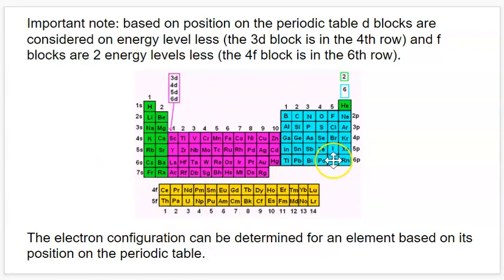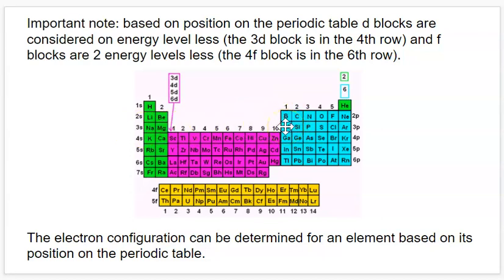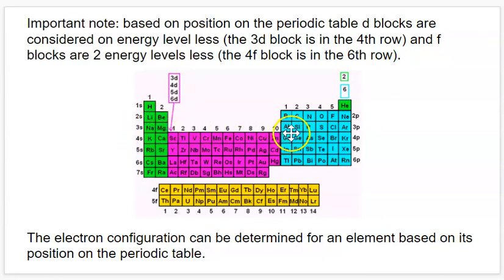What this all means is that we can figure out what the electron configuration of an element is going to be just based on its position on the periodic table. Let's do aluminum — it's in the P block in the third shell, so it's going to end in 3P1. All of the shells before that are full, so reading left to right, top to bottom: the first energy level is full — 1S2. The second energy level is full — 2S2, 2P6. The third energy level is partially full: the 3S is full — 3S2 — and then it ends in 3P1. So the overall configuration for aluminum is 1S2, 2S2, 2P6, 3S2, 3P1.